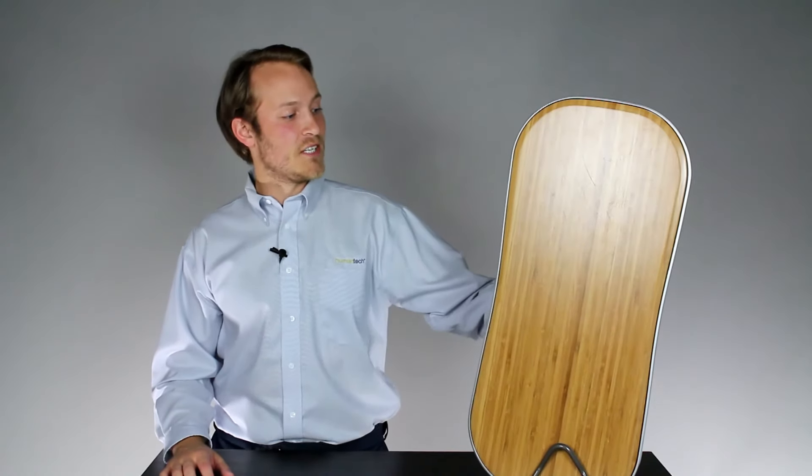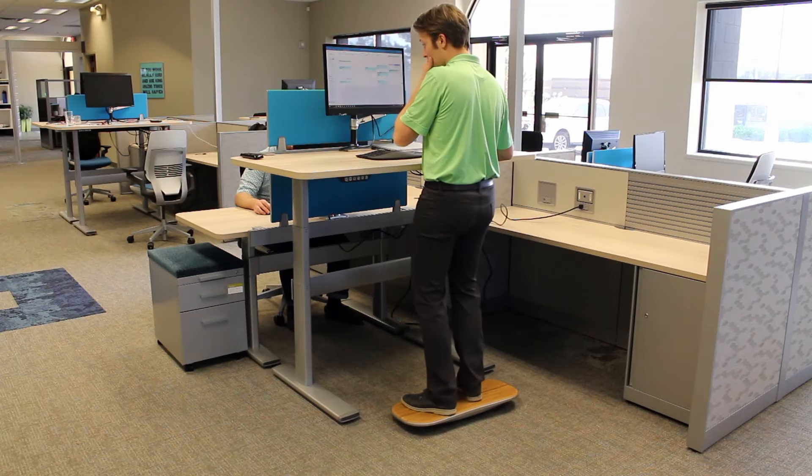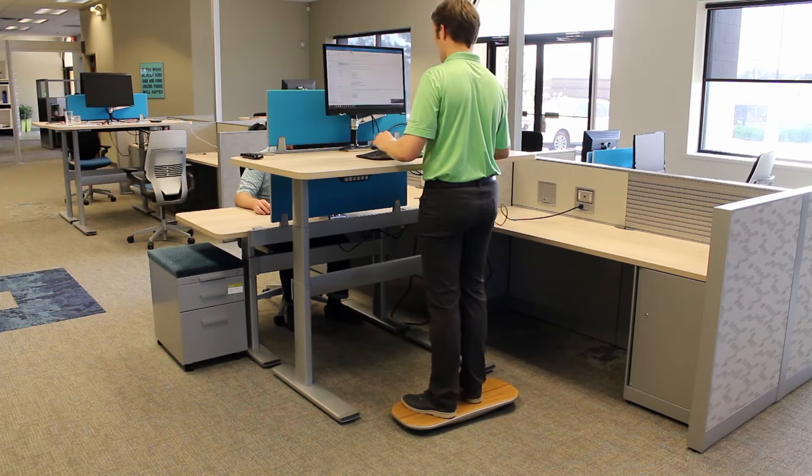The Fluid Stance comes with different surfaces which are good because they have different coefficients of friction and allow different sliding properties. Occasionally when I would use it, I could find myself maybe sliding away from the desk a little bit, but that problem is combated by Fluid Stance by offering those different surfaces with different coefficients of friction.